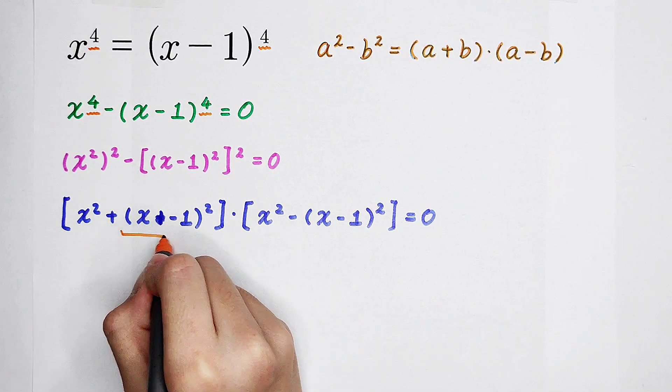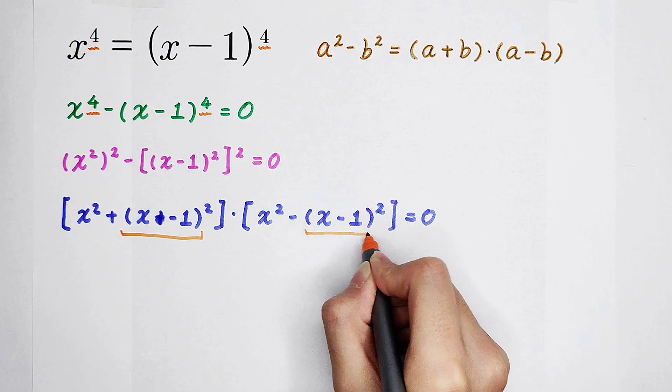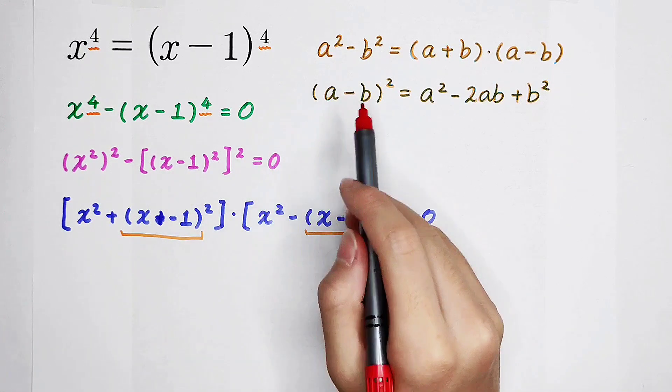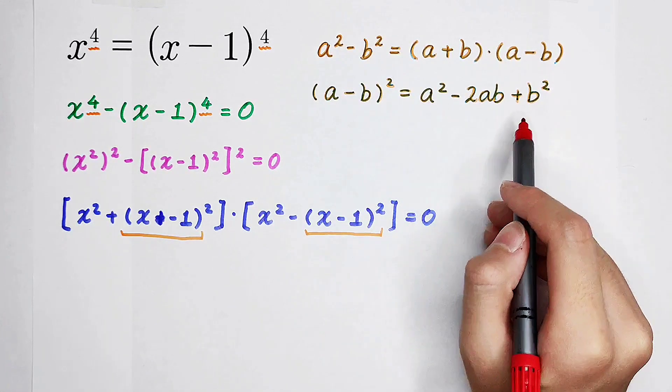And now, for dealing with x minus 1 squared, we have another formula: a minus b all squared is equal to a squared minus 2ab plus b squared.